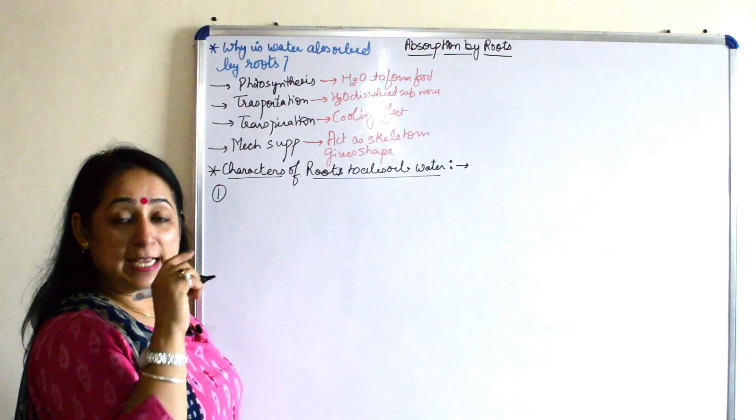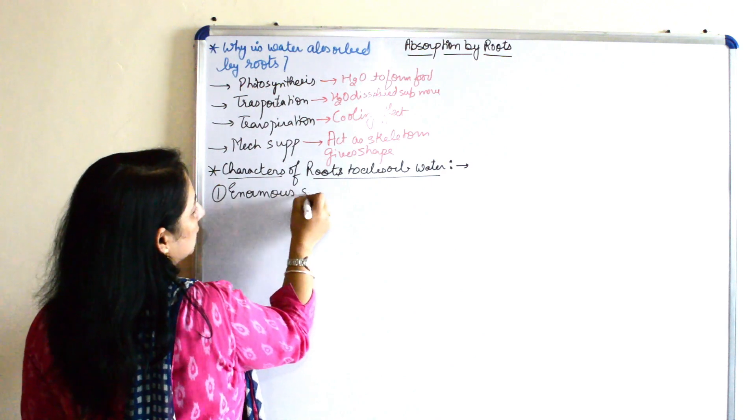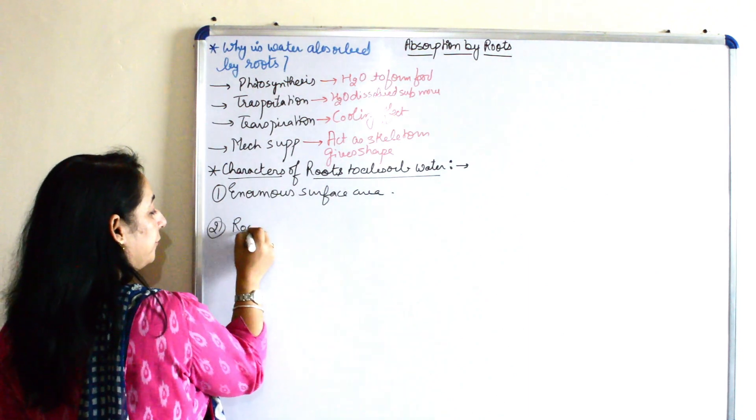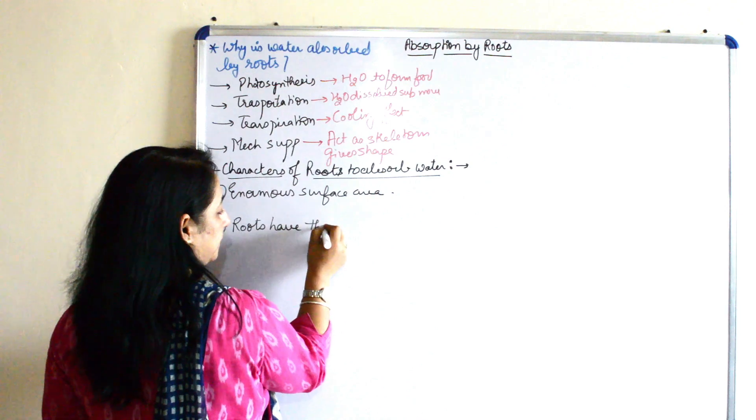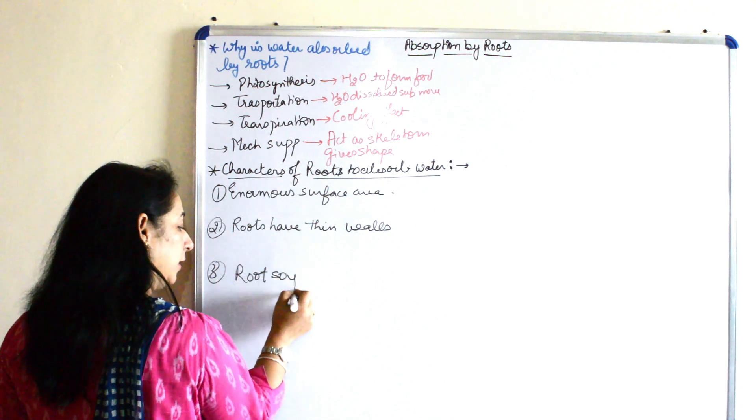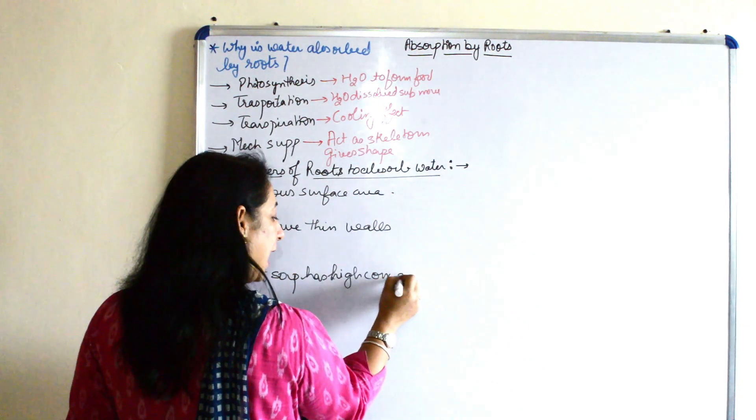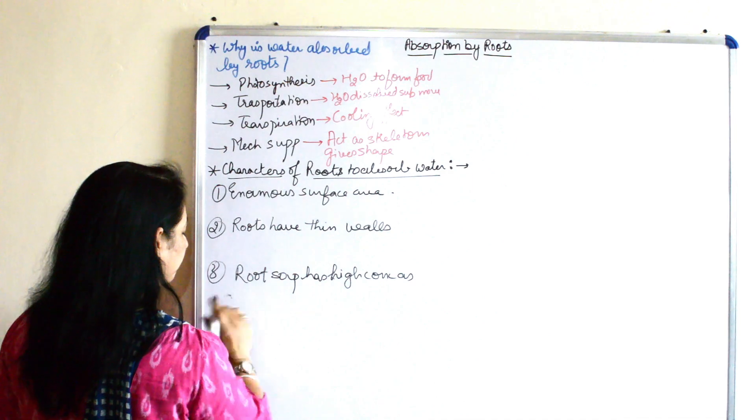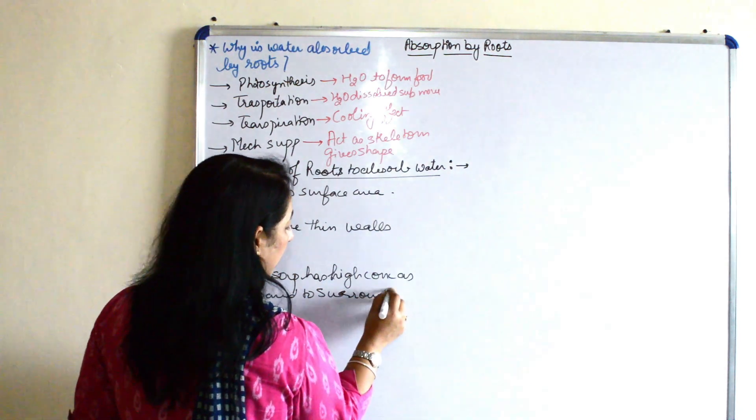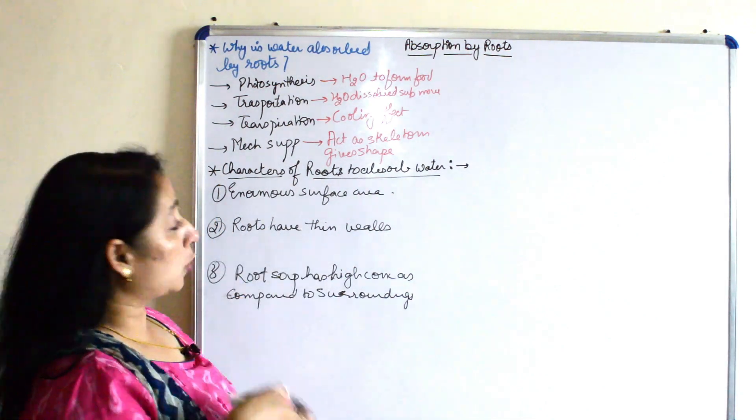The first characteristic is that the roots have a large or enormous surface area. Then roots have thin walls. Then root sap has high concentration as compared to surrounding water or surrounding.